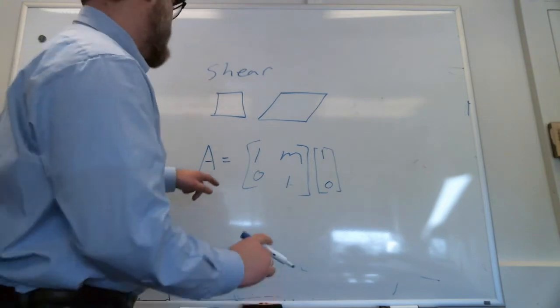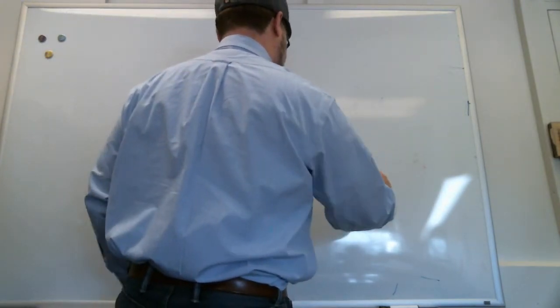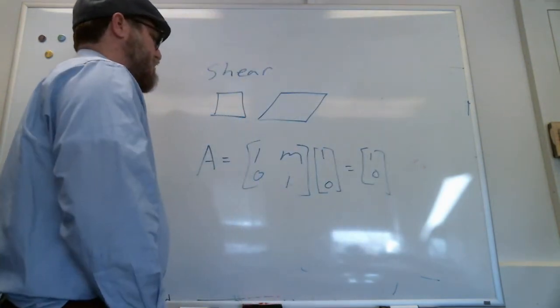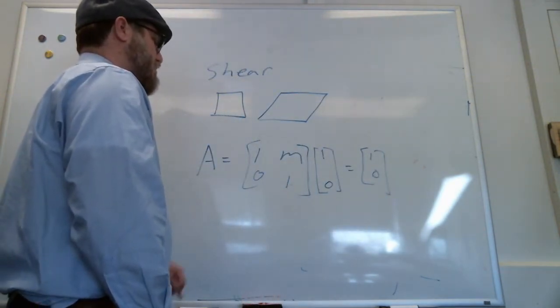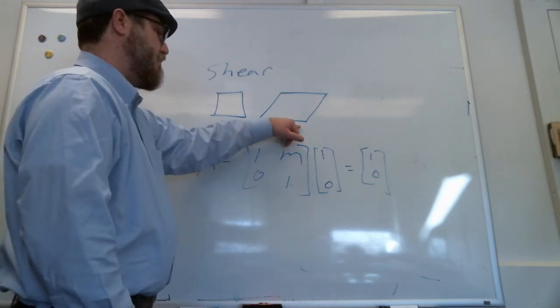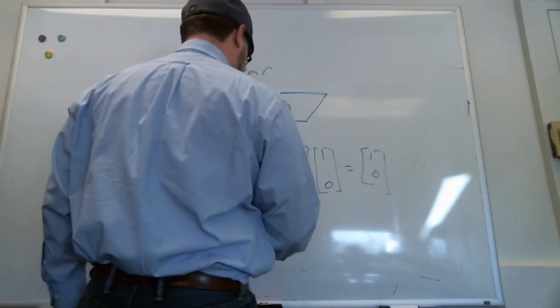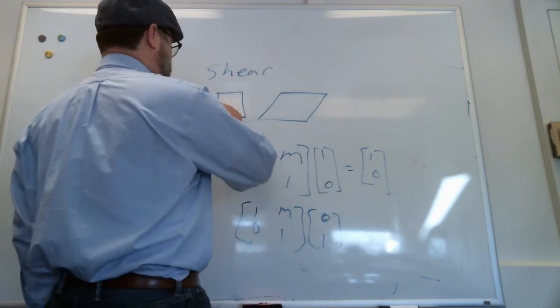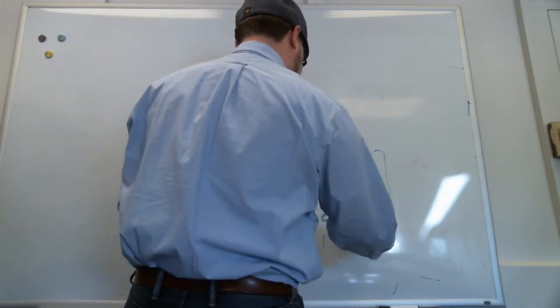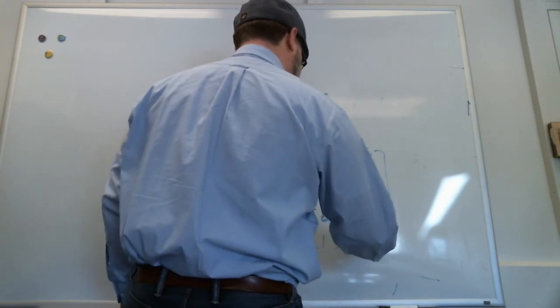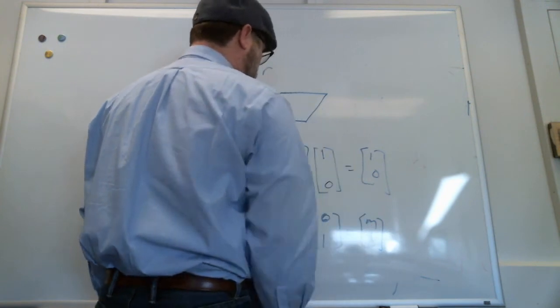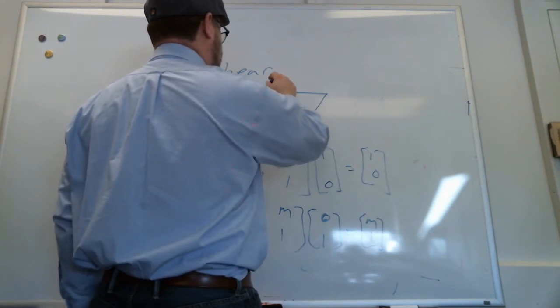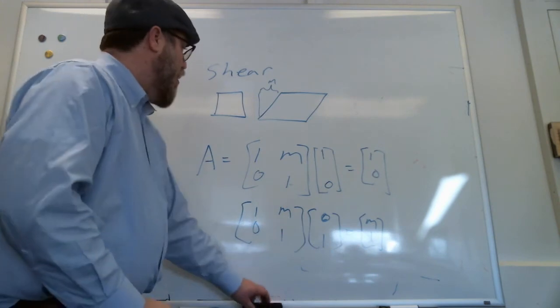One, zero, all right, zero, zero, that stays the same. But if we do a vector along the y-axis, all right, now that's this vector here, zero, m, zero, one. So this maps the vector zero, one onto m, one, right? So this distance here has to be m. Okay.